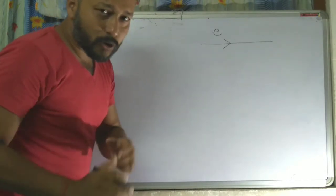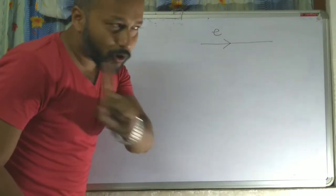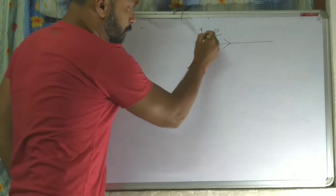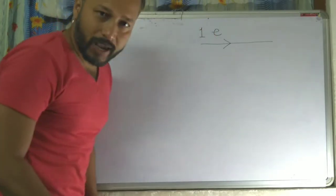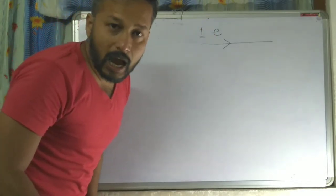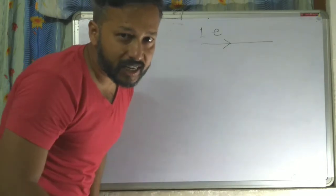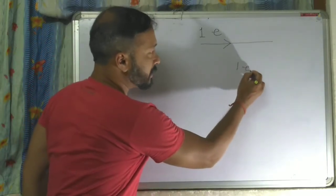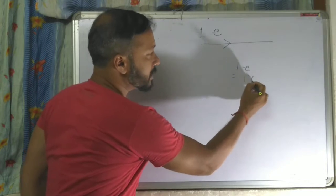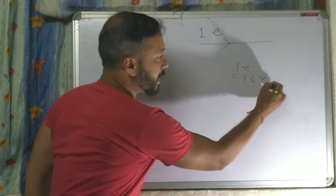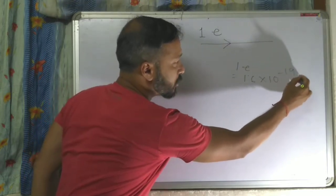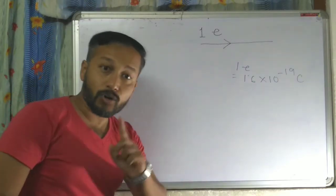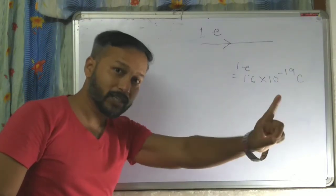If I say that one electron is passing through this wire, that means how much charge is passing? One electron means 1.6 into 10 to the power minus 19 coulomb. This is the amount of charge passing through this wire.